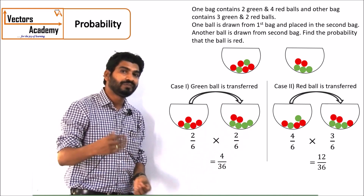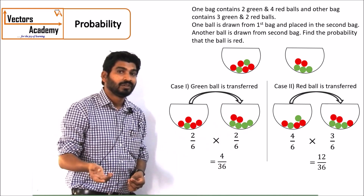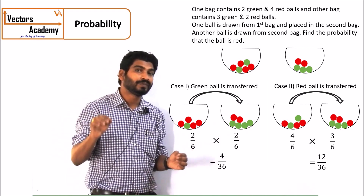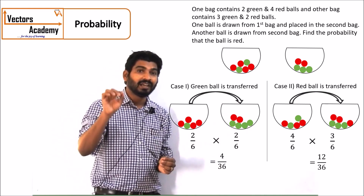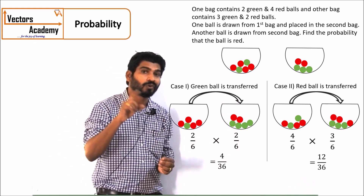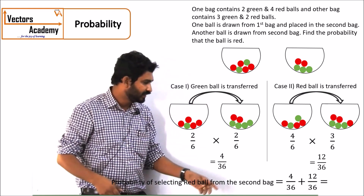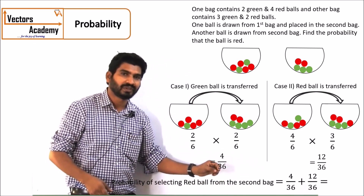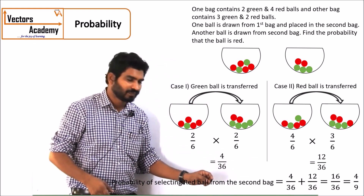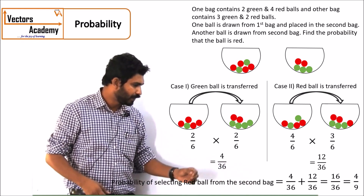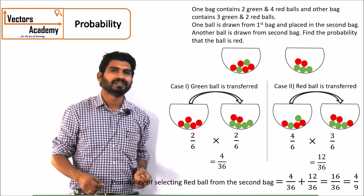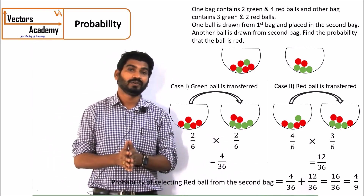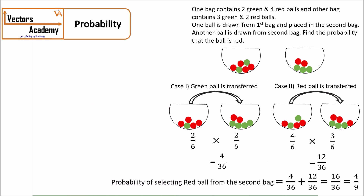Having solved these two different cases, the final probability of selecting a red ball from the second bag is the addition of both cases. This is how the probability is calculated.